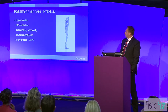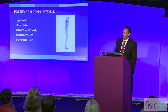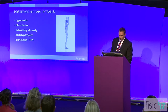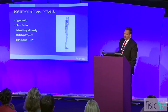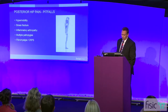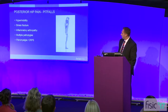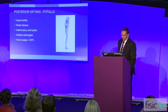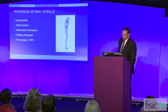With regards to pitfalls in diagnosis, there are loads, but these are the ones that can be difficult. Hypermobility sometimes just causes pain — treating those patients can be difficult and most of the time it is conservative. Stress fracture would hopefully be picked up on MRI, but quite often can be missed, especially with an insidious onset. Inflammatory arthropathy is important to consider, but multiple pathologies do coexist — unpicking that can be difficult. And unfortunately, patients with fibromyalgia or chronic regional pain syndrome are very difficult to treat.